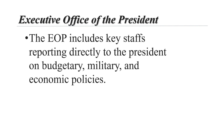Another instrument of presidential control over the bureaucracy is the Executive Office of the President. The EOP was established during the presidency of FDR. The EOP includes key staffs that report directly to the president on topics such as budgets, military, and economic policies — including the National Security Council and the Council of Economic Advisors. The EOP is usually considered the component of the bureaucracy most responsive to the president, with the highest share of political appointees.